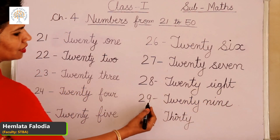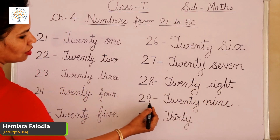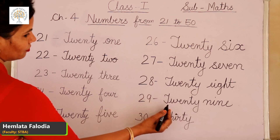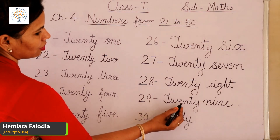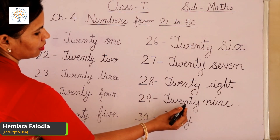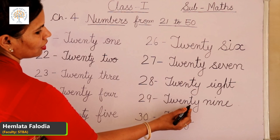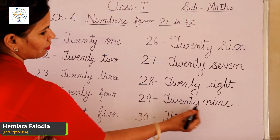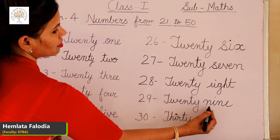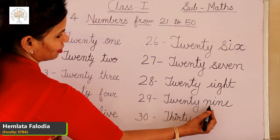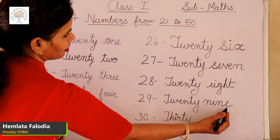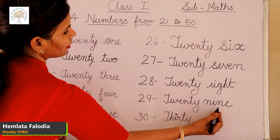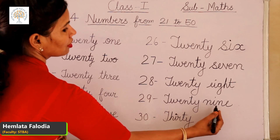Come to the next, 29. T-W-E-N-T-Y, 20 and 9. N-I-N-E, 9. This is 29.